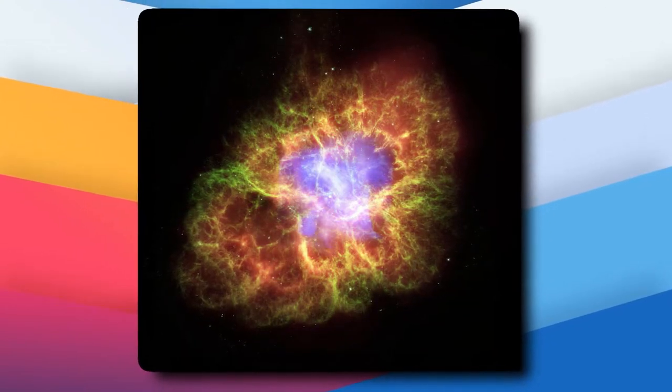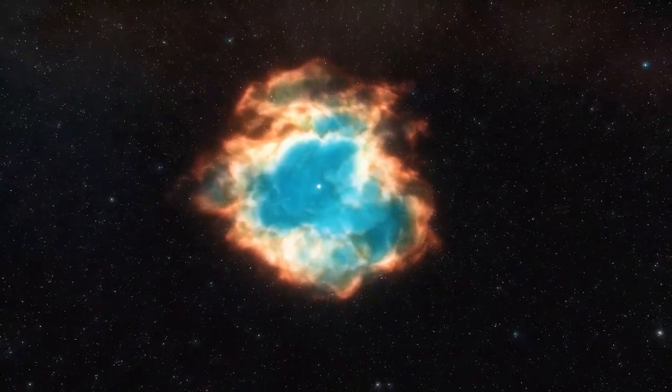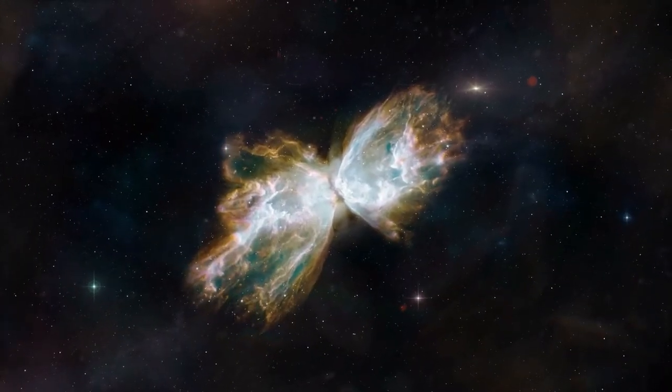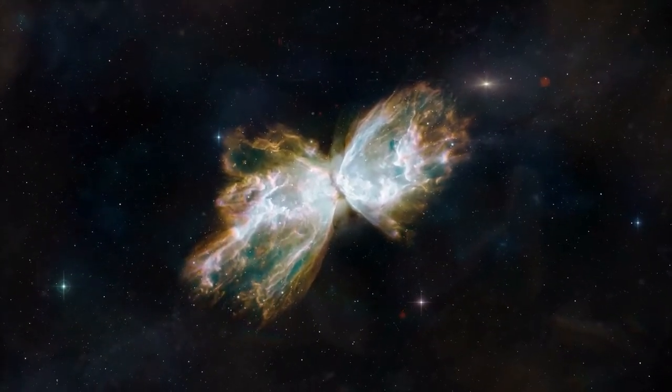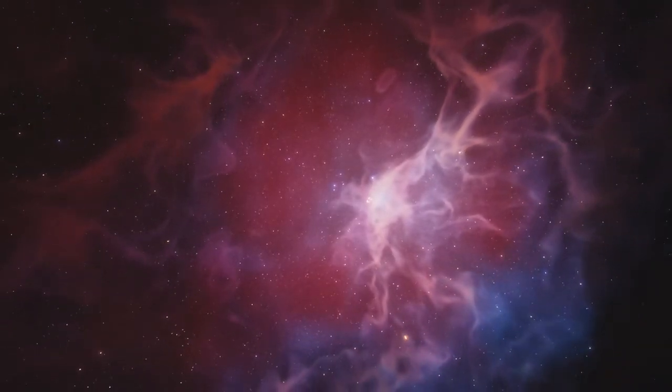As the star's outer layers fall off, they hit the neutron star that is forming. This causes a huge explosion called a supernova. The energy from such an explosion might even be brighter than all the stars in the galaxy put together. Material from the star is sent out into space and becomes a supernova remnant.